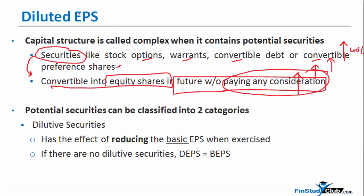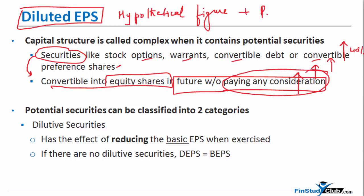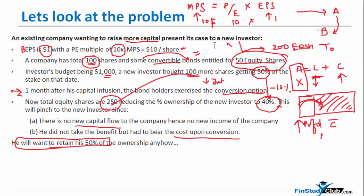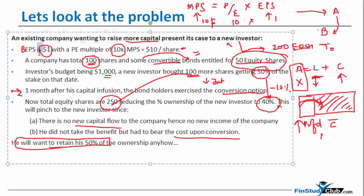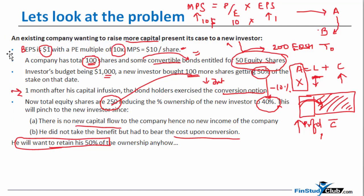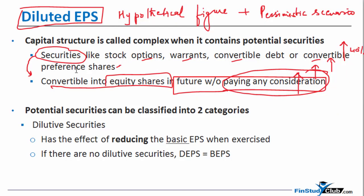So what do I do with these 50 equity shares? I need to recalculate a hypothetical figure under a pessimistic scenario. The new investor argued that the $1 EPS was calculated only on the 100-share base, not including these 50. The company should have included these 50 along with the 100 to calculate earnings per share before approaching the new investor. That means the company should have diluted its earnings per share — if the number of shares goes up, the ratio goes down — before raising further capital. That is what gave rise to diluted EPS.